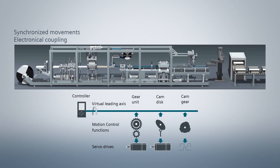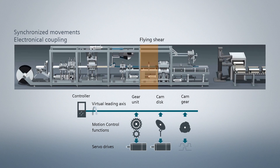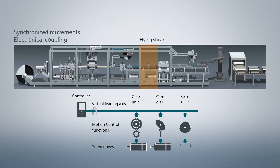Let's have a closer look at the station of this machine, namely the station flying shear. A flying shear cuts products on a continuously moving material. How easy it is to get a running flying shear application in less than 3 minutes with the TIA Portal, I will show you now.